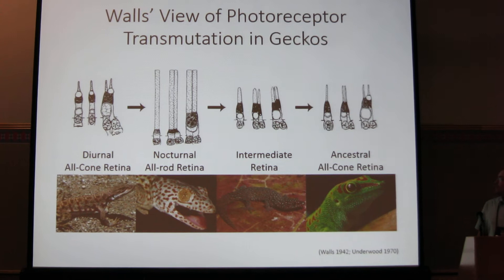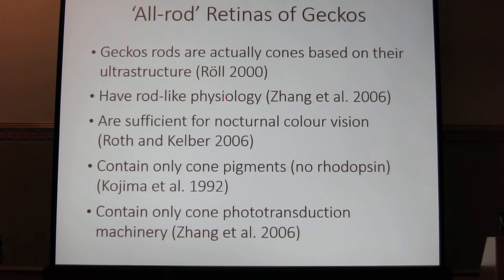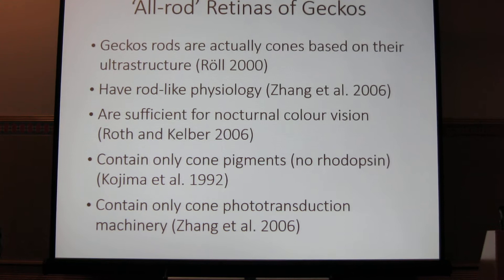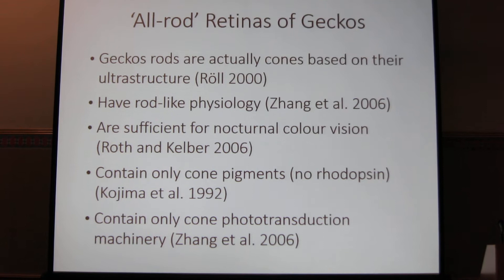The all-rod retinas of geckos are actually all-cone retinas based on their ultrastructure — they have open discs. But they have a rod-like physiology and are sufficient for nocturnal color vision. There have been some behavioral tests that show that geckos can actually see color under dim-light conditions where humans are colorblind. However, it's been supported that they have only cone opsins and only cone phototransduction proteins, and I wanted to test this using some RNA-seq data.